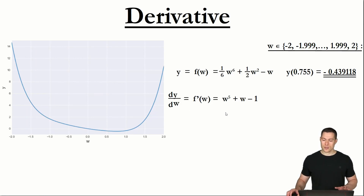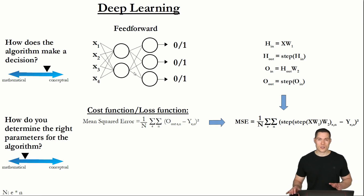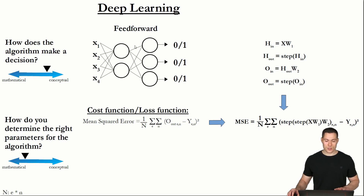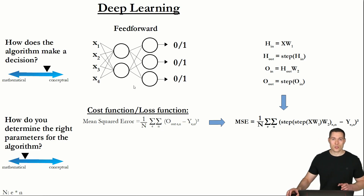Such a brute force approach is not really practical for our more complex function, because here we don't just have one variable but many — in this case, 14. If we used 100 values for each of those 14 weights, the number of calculations would be 100 raised to the power of 14. Executing all those calculations to find the combination of weights resulting in the lowest mean squared error would simply take too long, especially since this neural net is relatively small. For larger nets with many more weights, the brute force approach is even less practical.